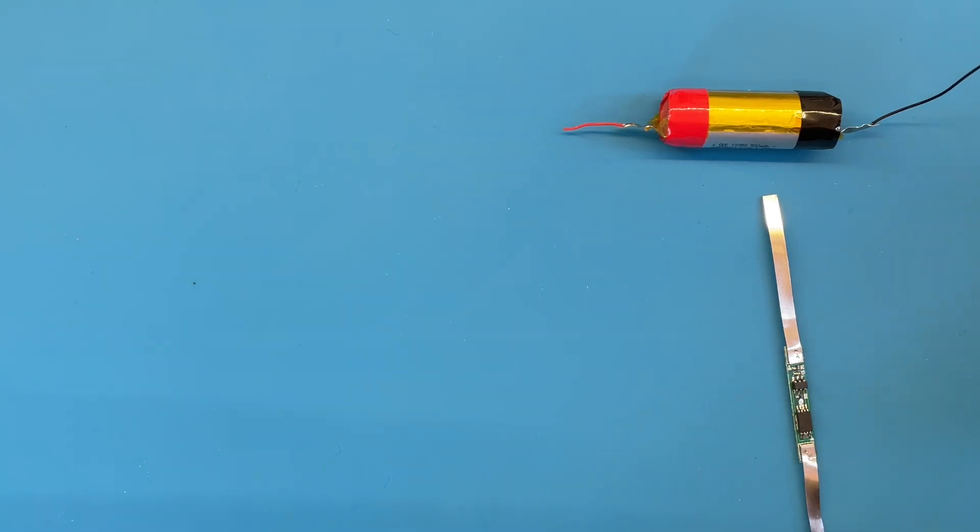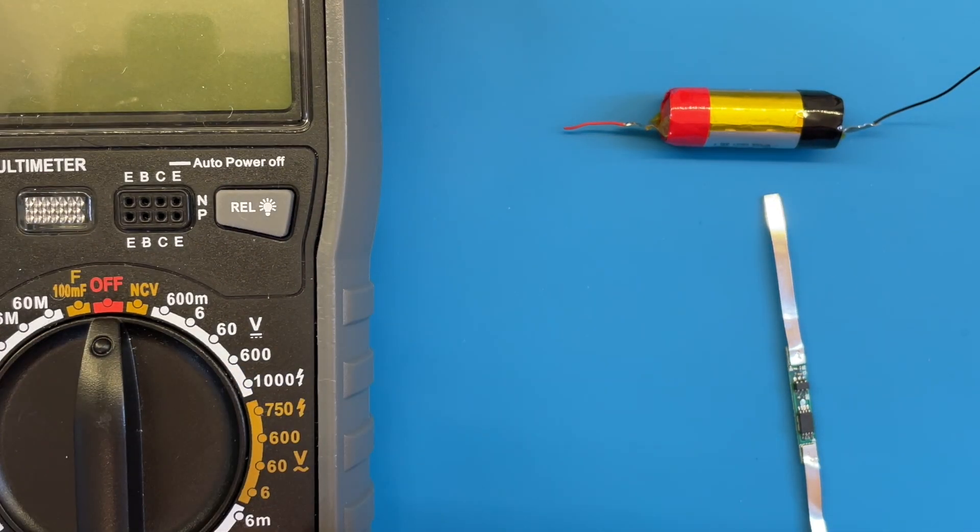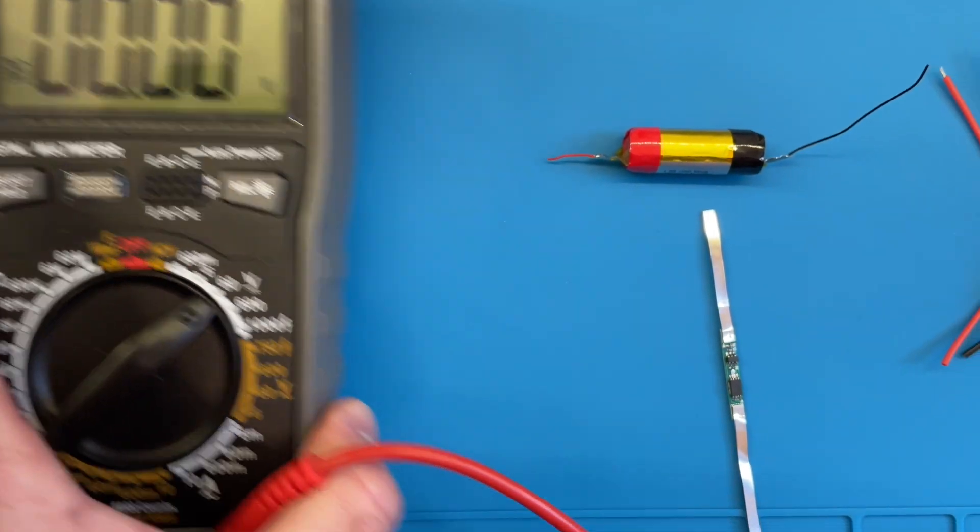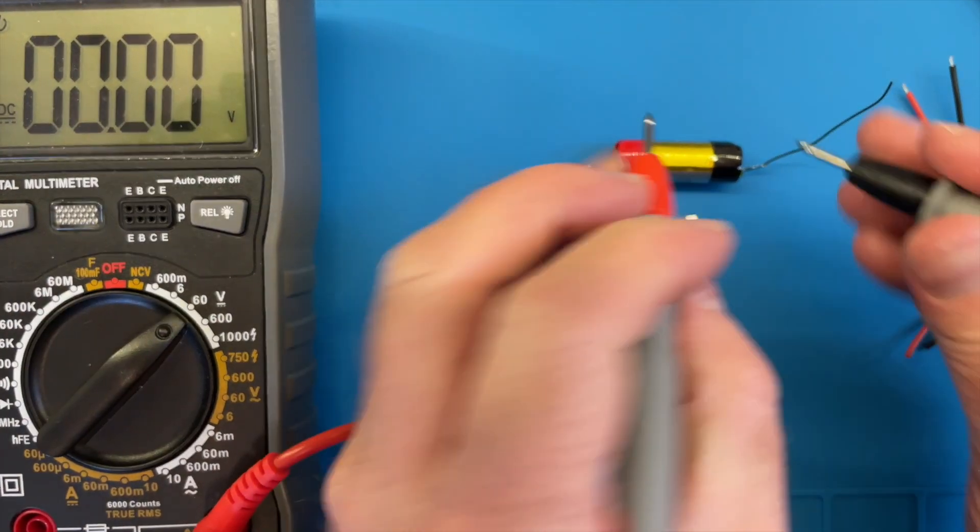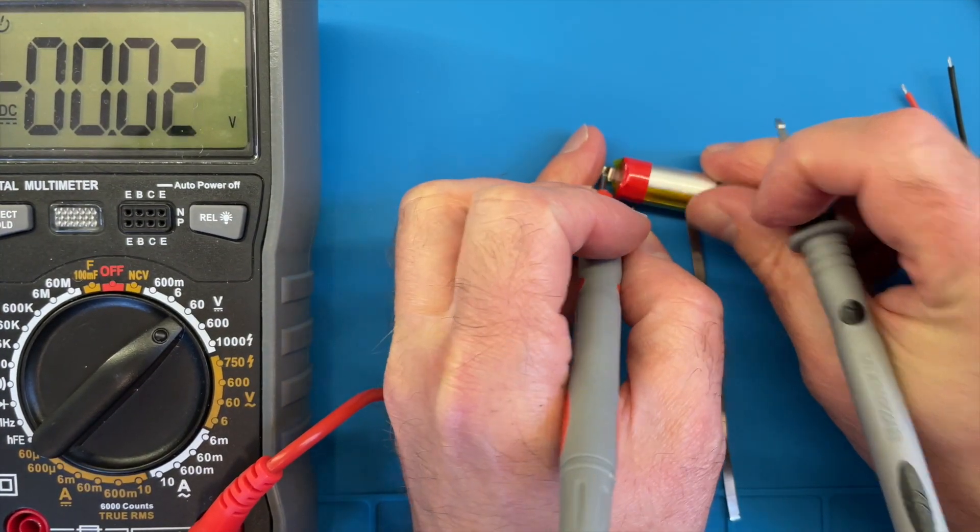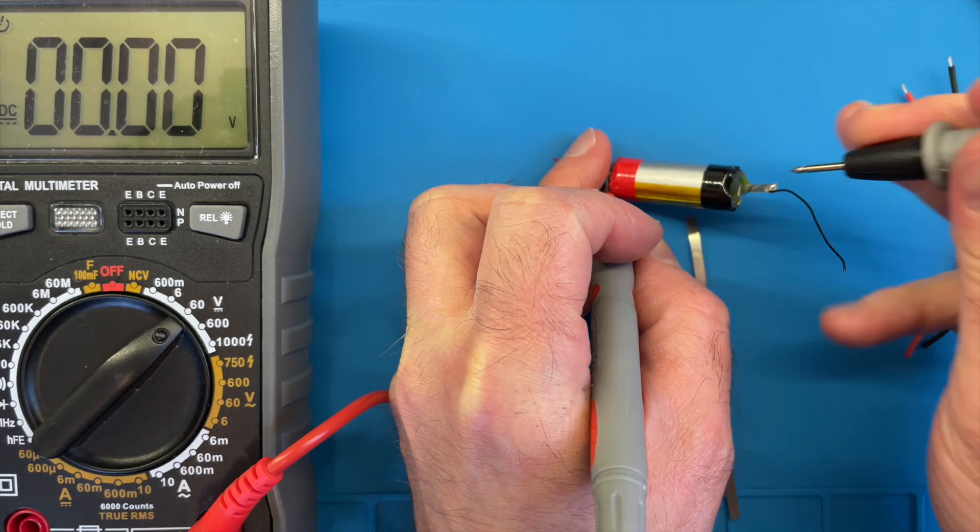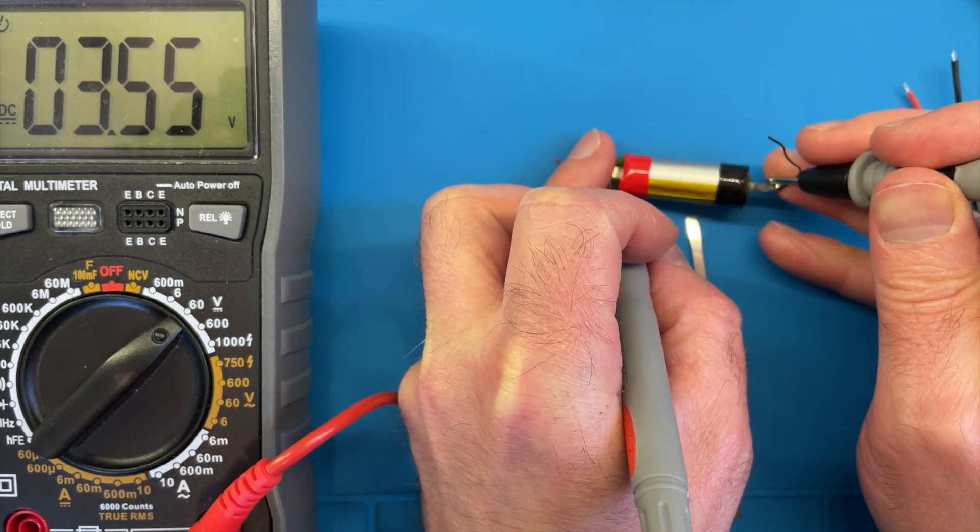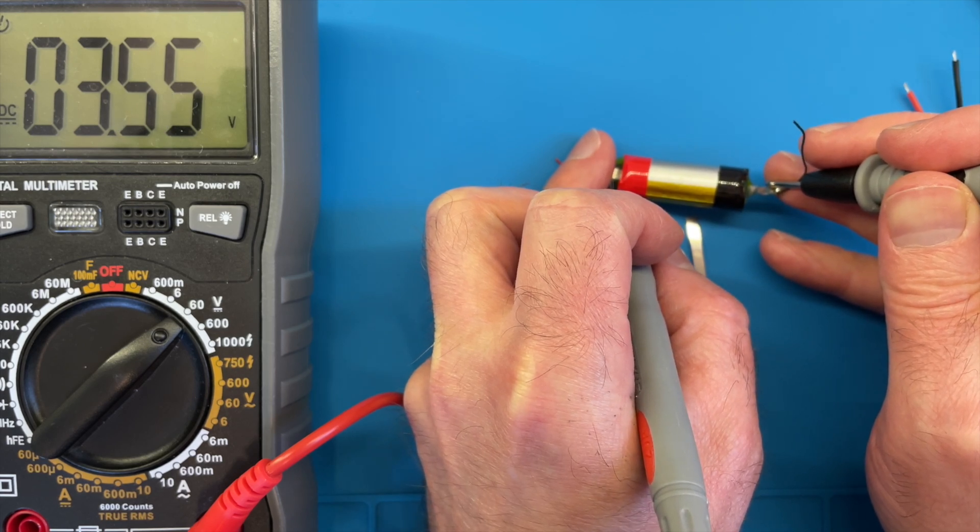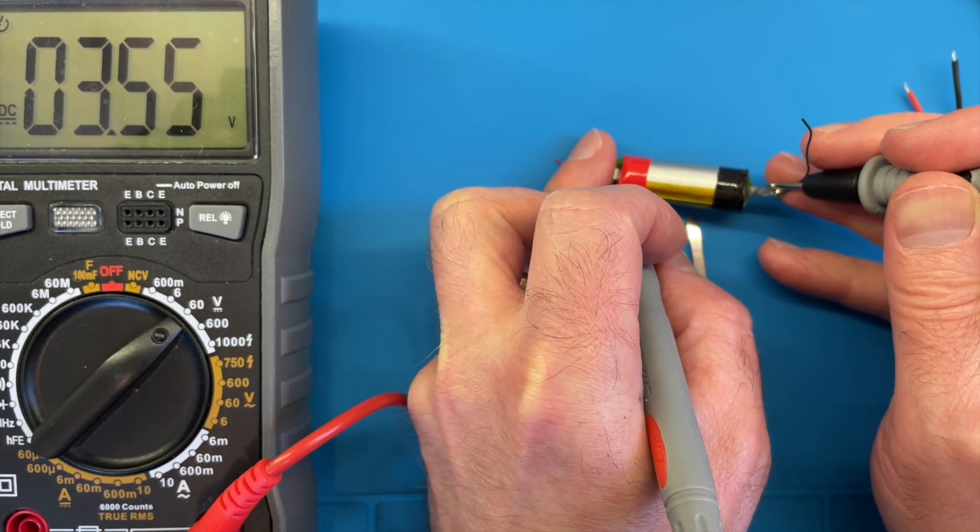So I thought before we do anything let's just check to make sure that red is red and black is black because often they seem to be swapped around. We can also check our battery voltage as well. So let's see what we've got. That seems pretty reasonable. 3.5 volts. It's pretty flat. We'll try charging it up once I've connected the battery protection.